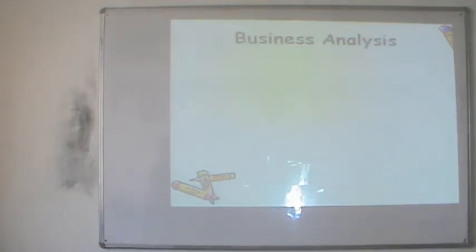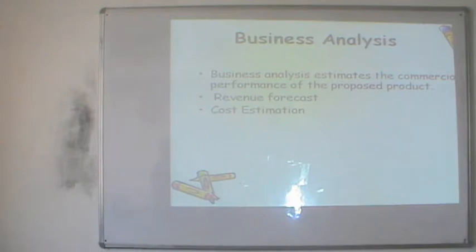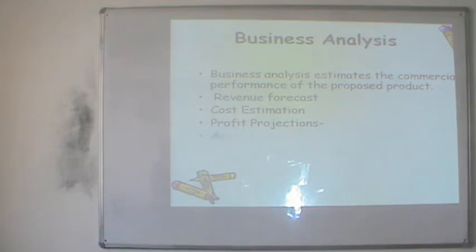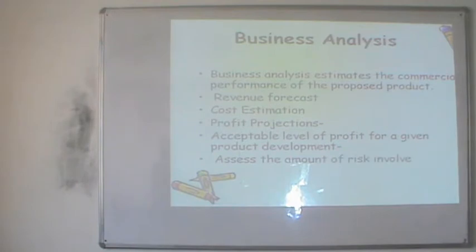Once the four Ps are done, step five is business analysis — the estimation of the commercial performance of the proposed product. The company enters the quantitative phase, finding numbers for revenue forecasts, cost estimations, profit projections, competitor pricing, and the competitor's profit quotient and acceptable level of profits for the given product development. Such targets are set, and the company also assesses the amount of risk involved.